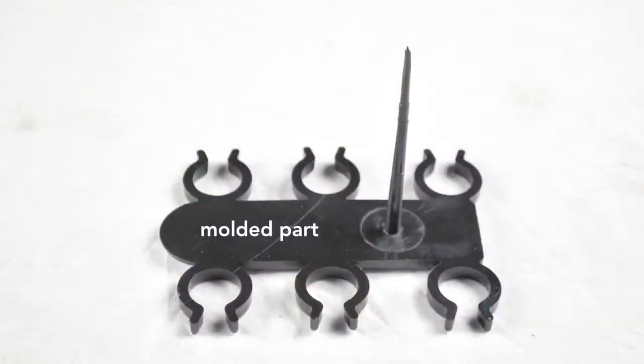When the part drops from the mold, an operator has to remove the sprue, that section of plastic that connected the injection unit to the mold. Sprues are manually twisted or cut off the part. Sprues are attached to objects only in molds that make a single part at a time, like a chair.